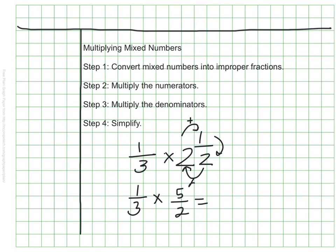Step two, I'll multiply the numerators. One times five is five. Three times two is six. Step four would be to simplify, but five and six don't share any factors other than one, so I cannot simplify. My answer, as we saw before, is five-sixths. It worked.